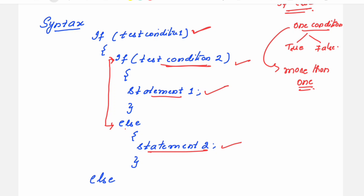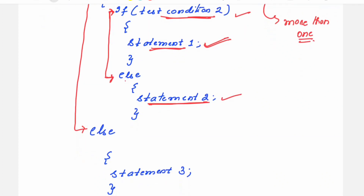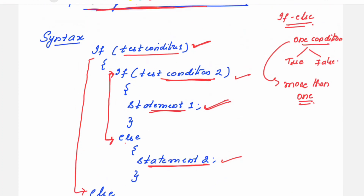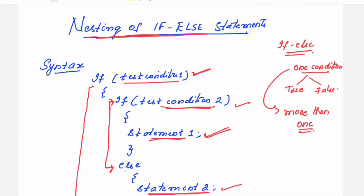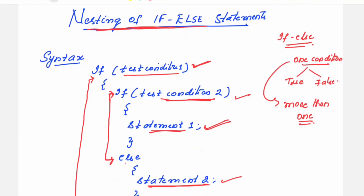This is the inner if-else. If test condition 2 is true, you execute one statement; if test condition 2 is false, you execute another statement. Suppose if condition 1 itself becomes false, then control goes directly to the else part — statement 3 will get executed. This is one pair of if-else.